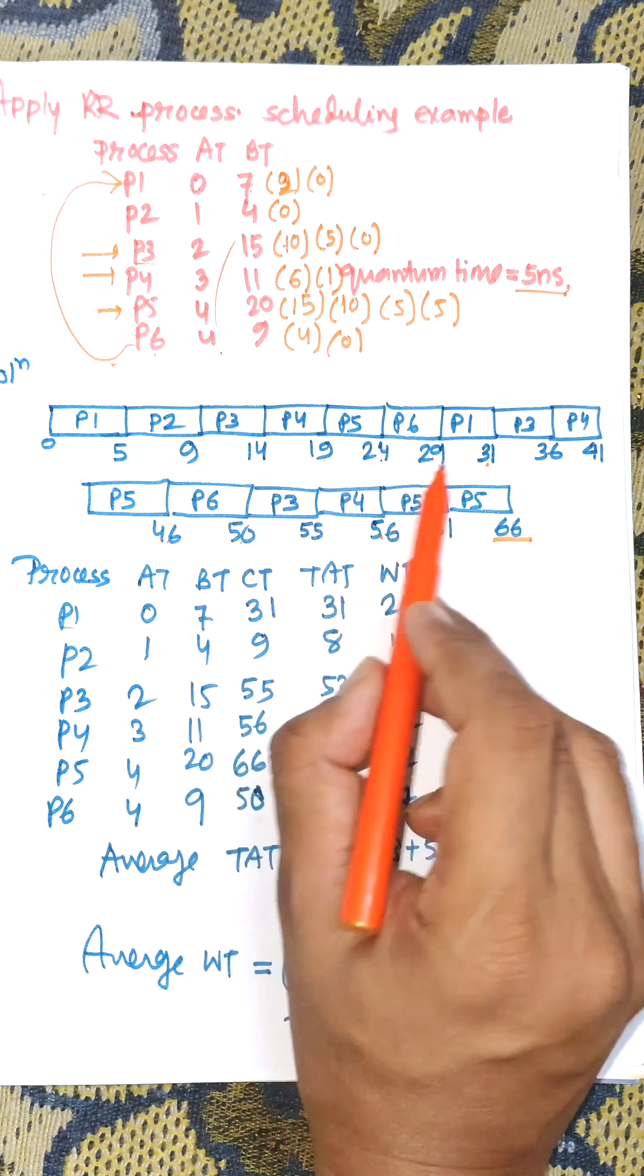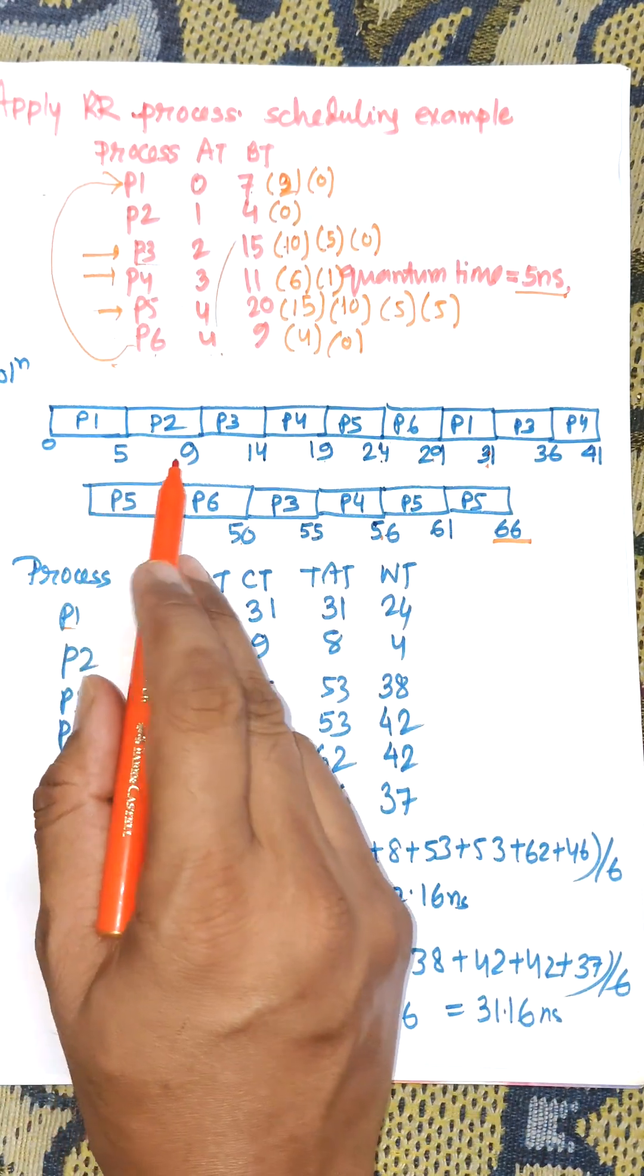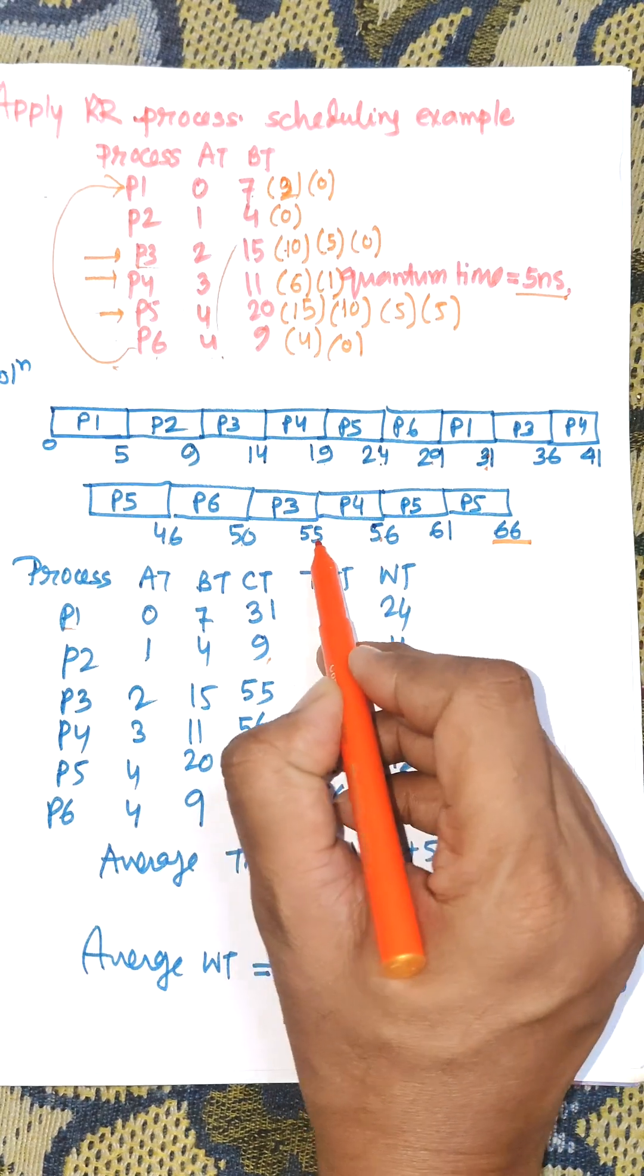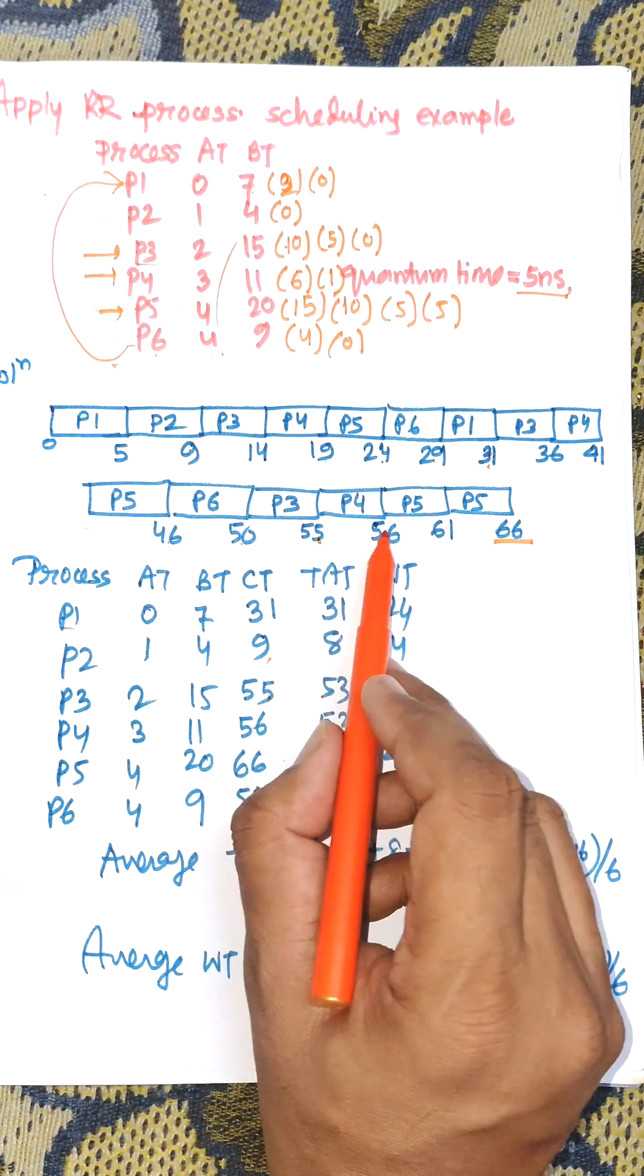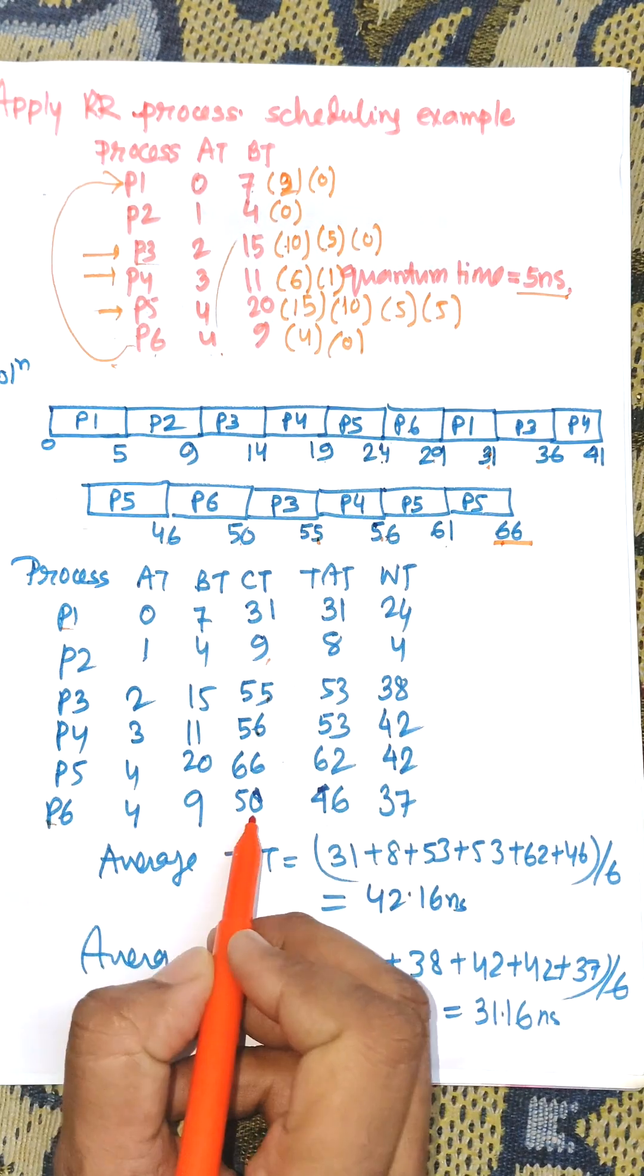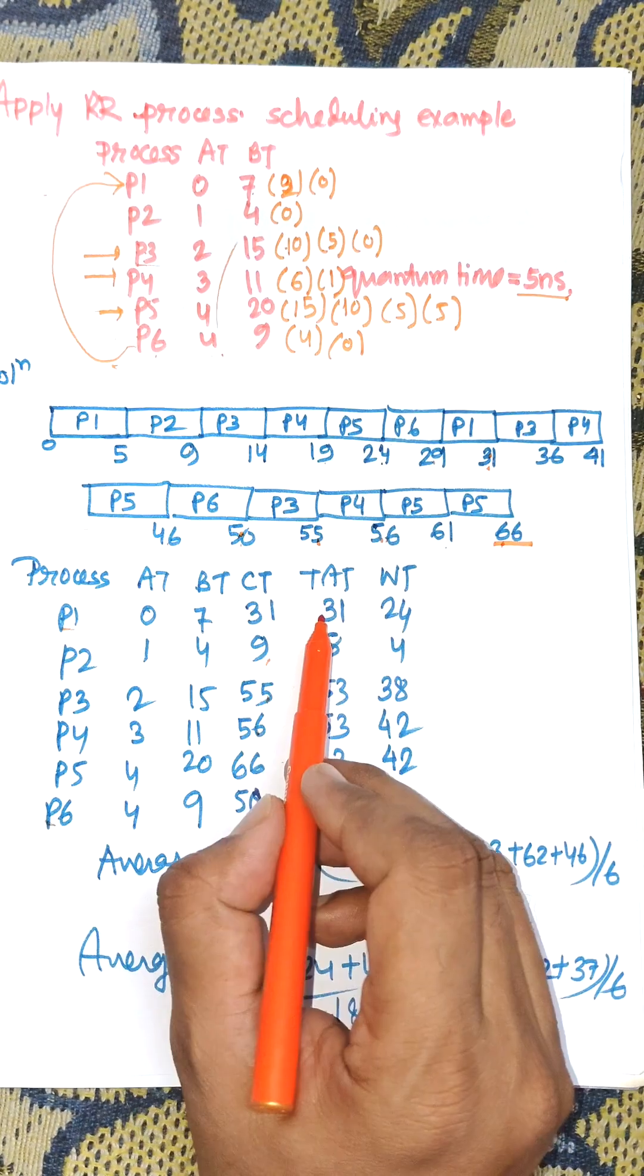Completion time for P1 is 31, P2 is 9, P3 is 55, P4 is 56, P5 is 66, and P6 is 50.